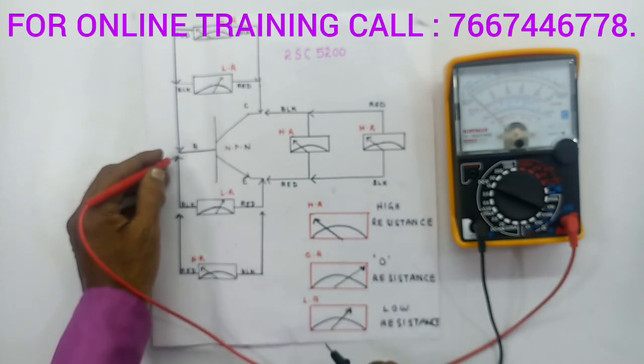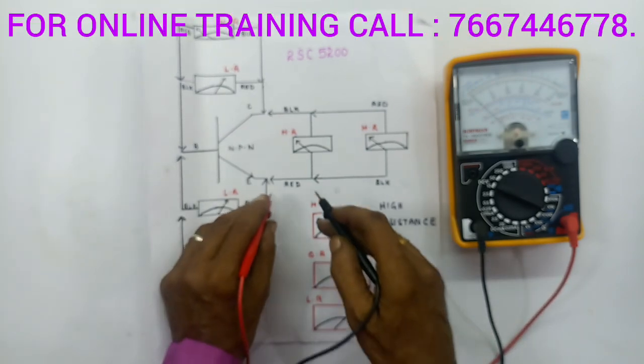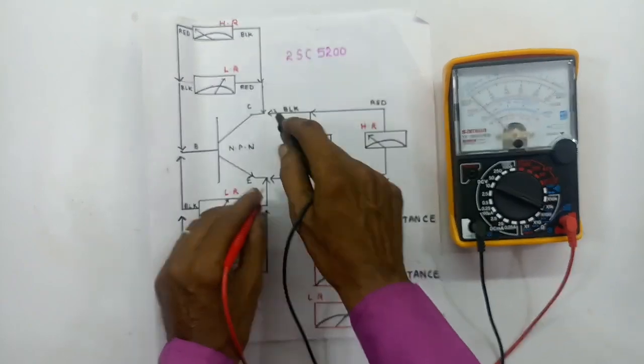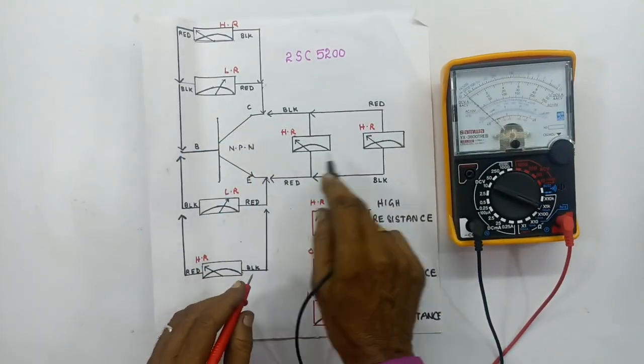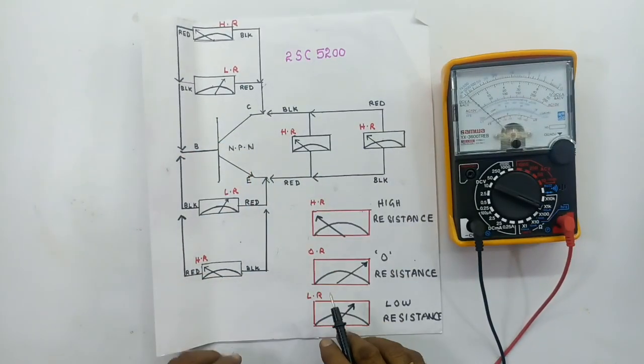That is high resistance — now check the other connections: emitter to collector and collector to emitter. These also show high resistance — it's not open or leaking.